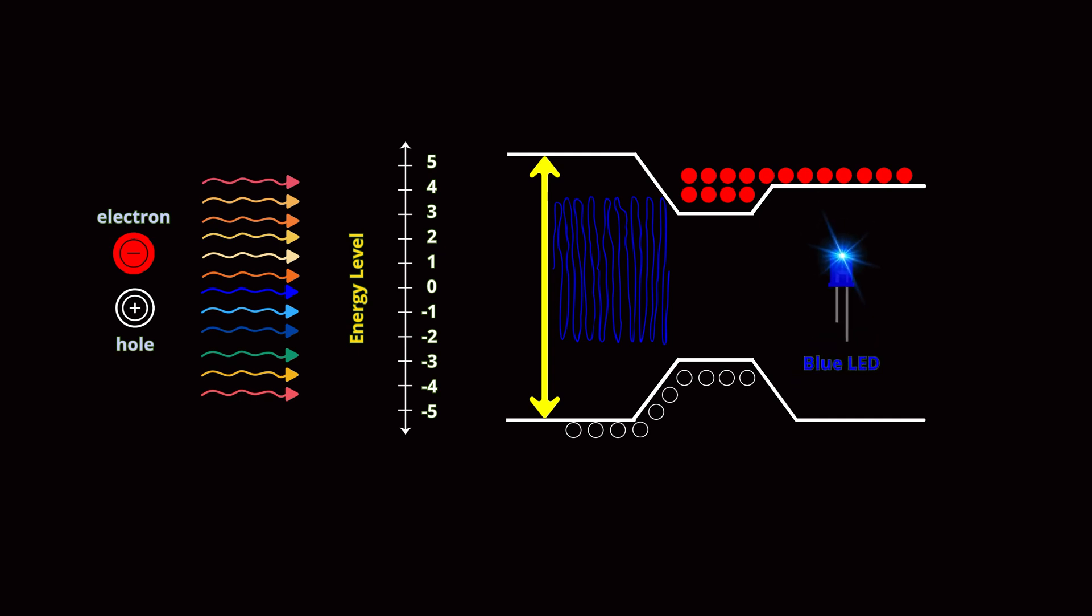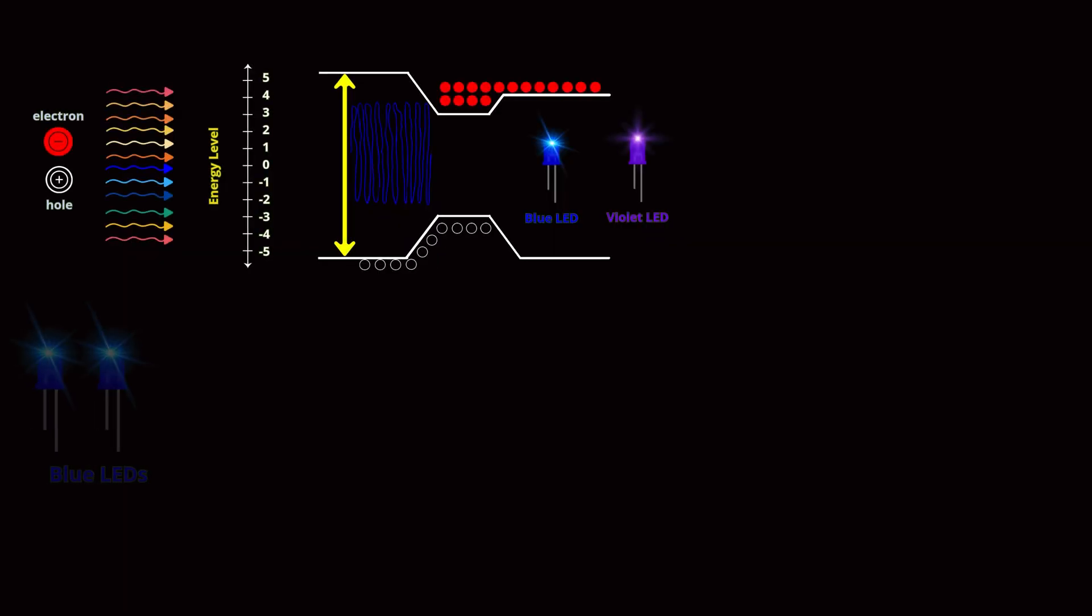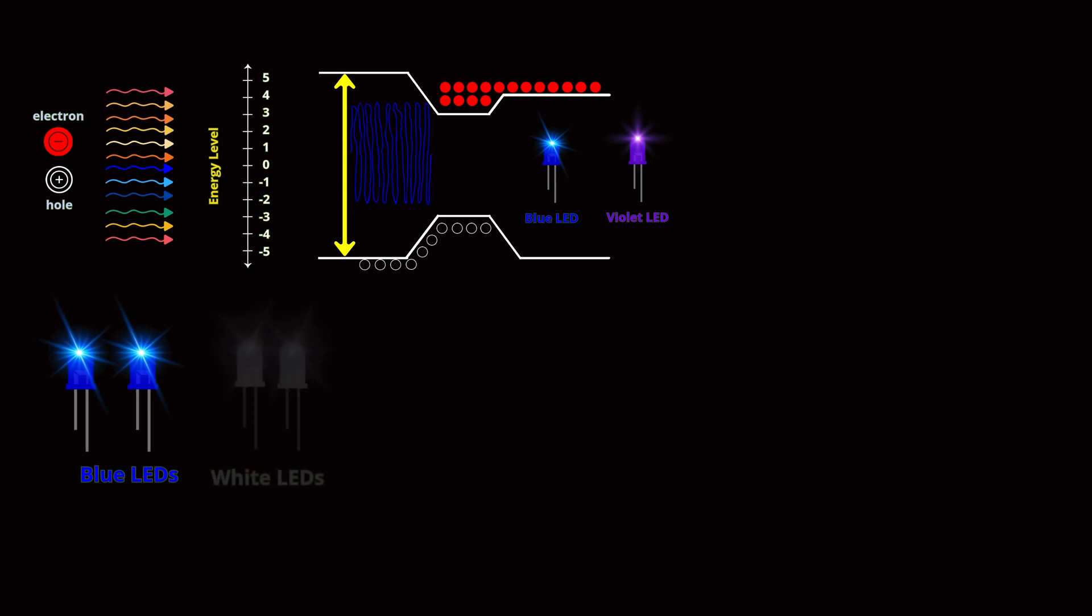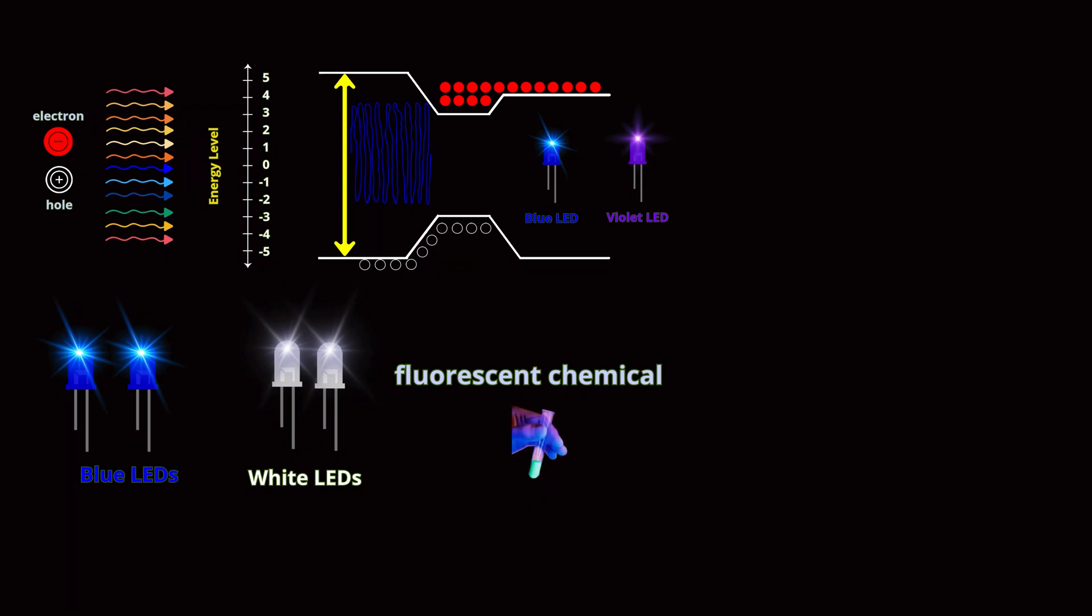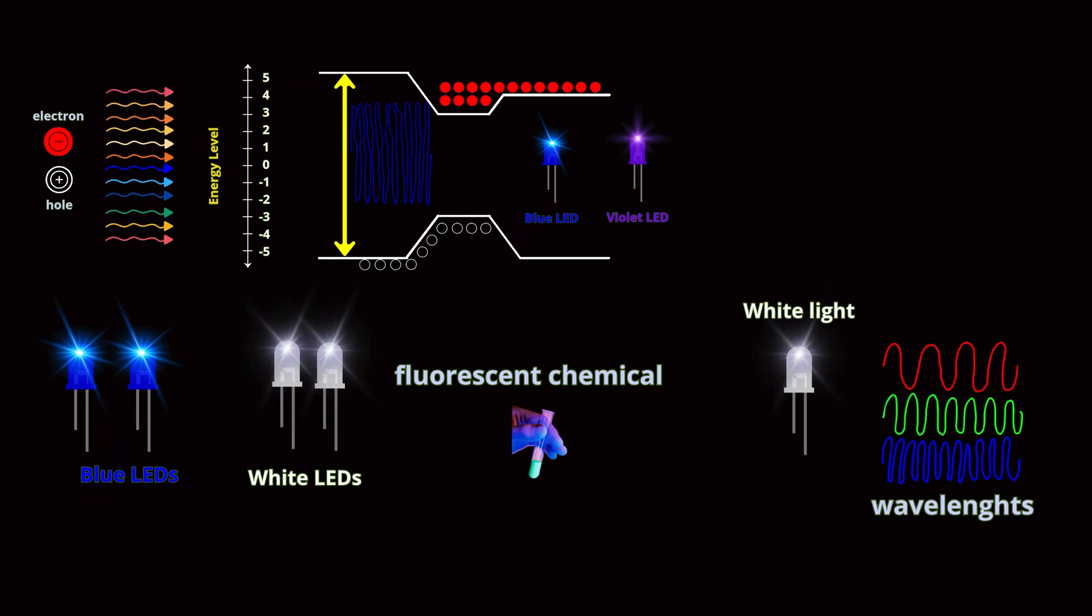Converting blue LEDs to white LEDs involves using a blue LED to excite a fluorescent chemical, which then converts the blue light to white light. This process is essential because white light comprises red, green, and blue wavelengths, and without blue, you can't achieve white light.